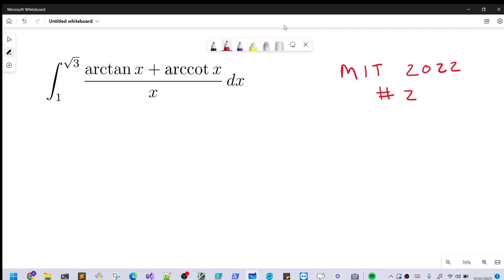Hey, we've got this really interesting integral here from the MIT Integration B 2022. This was problem number two. So to get started, we have inverse tan x plus inverse cotangent x over x. We're going to evaluate that, integrate that from square root of three to one.